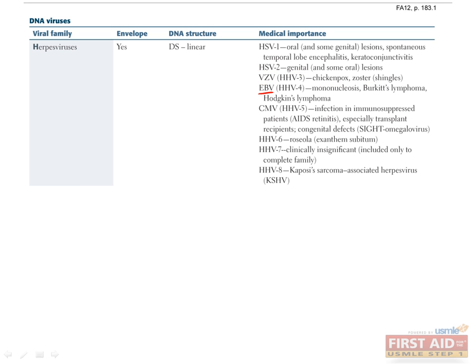EBV is the cause of infectious mononucleosis, better known as just mono, Burkitt's lymphoma, and nasopharyngeal carcinoma.